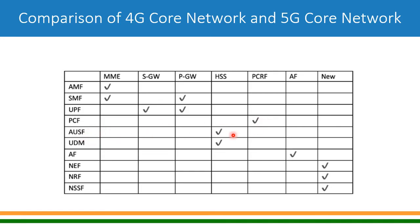Authentication was also done by HSS in 4G, which is now being done by AUSF in 5G. Part of the HSS function is also in UDM, Unified Data Management. Application Function was also present in 4G. In the service-based architecture, a new network element called Network Exposure Function allows third-party systems to connect to the 5G network via API.